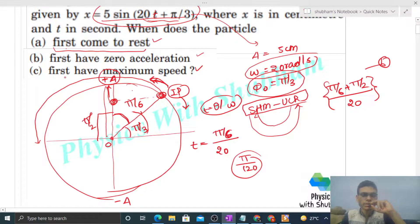Let's check first time maximum speed. Maximum speed also occurs at the mean position, so again, when will it first reach mean position?